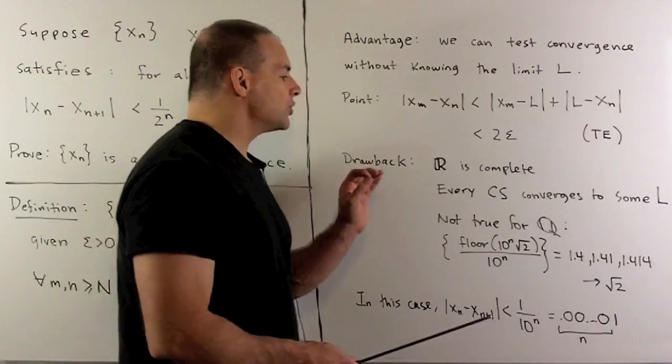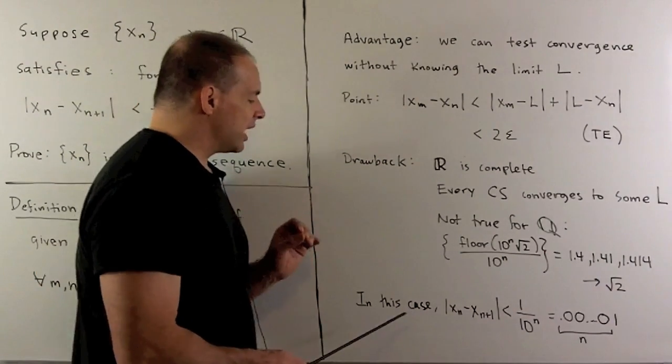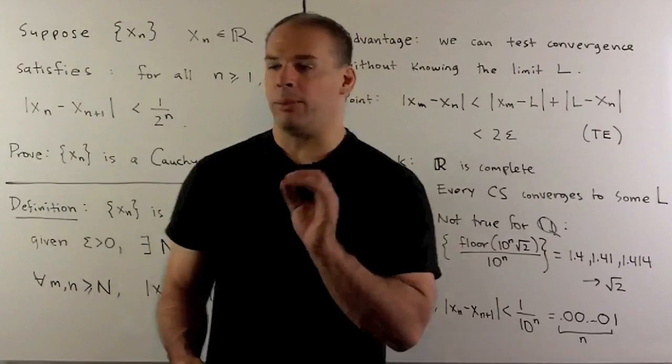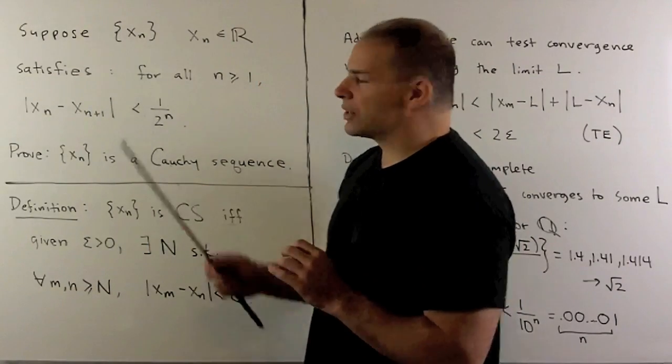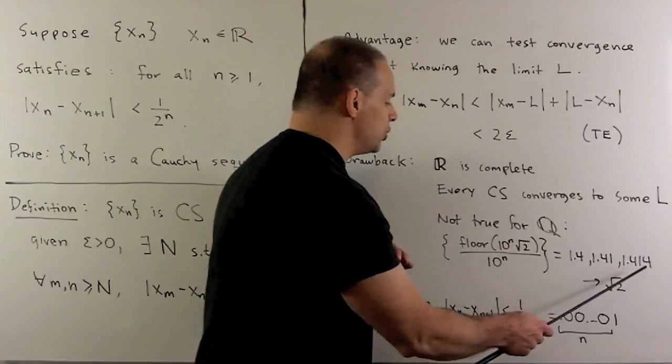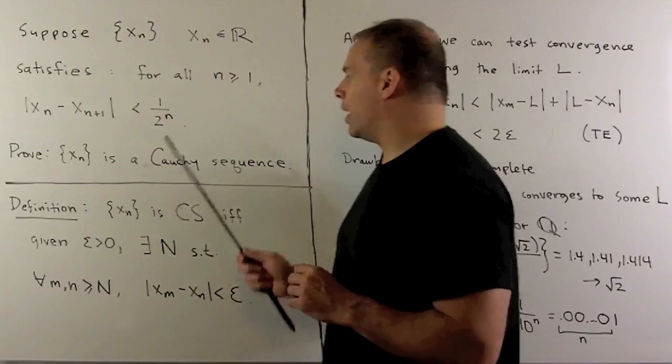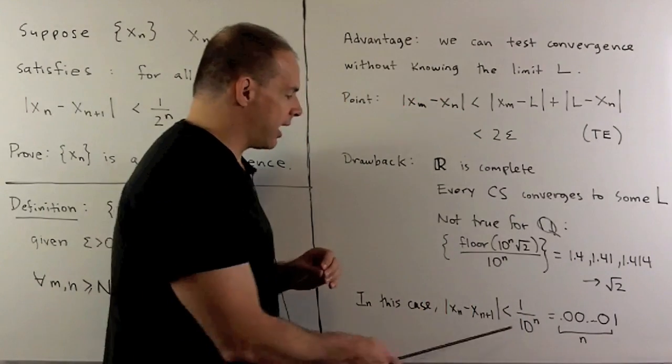You'll also note, this is also going to give us a case of the problem we have at hand. This sequence that we're looking at here is going to be Cauchy, where we replace the one-half with a one-tenth.